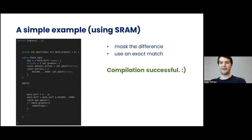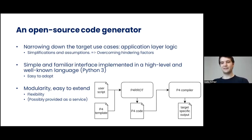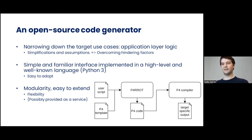Looking at our code and its maintainability, we might say there must be a better way of doing this. To provide a better offloading experience, we developed an open source code generator library. One key advantage is that we narrow down the scope to application layer logic, which allows us to make many simplifications and assumptions. Our second principle is that we do not introduce a new language — we just create an API for an already existing and popular language, in our case Python 3. We also want to keep our solution modular and easy to extend.